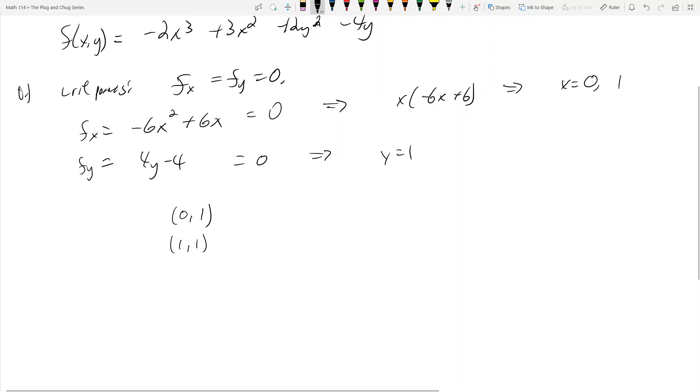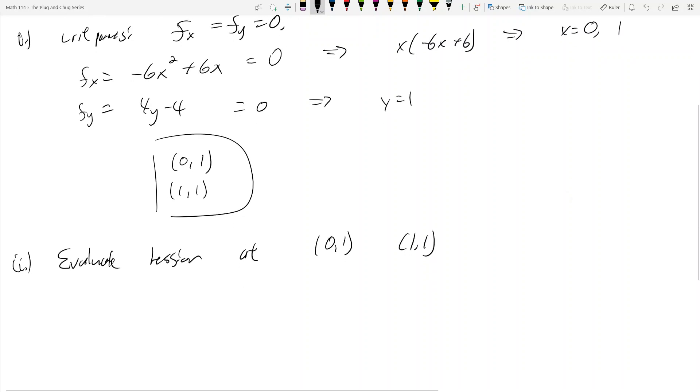And we focus back to these two critical points, 0, 1 and 1, 1. And now what do I want to do? The second part is to evaluate the Hessian at 0, 1 and 1, 1.